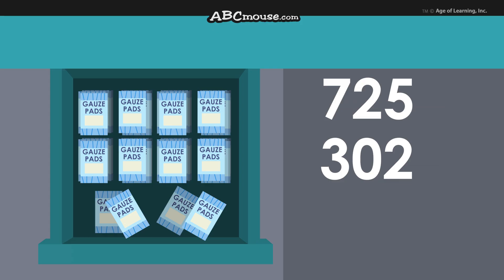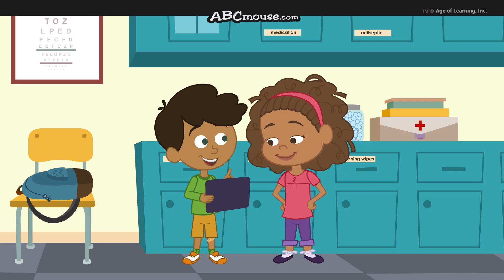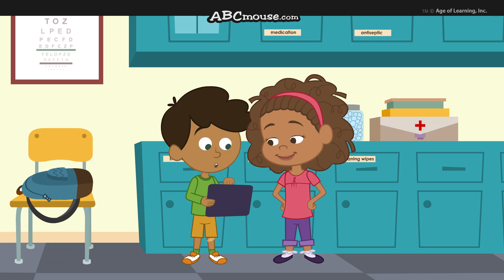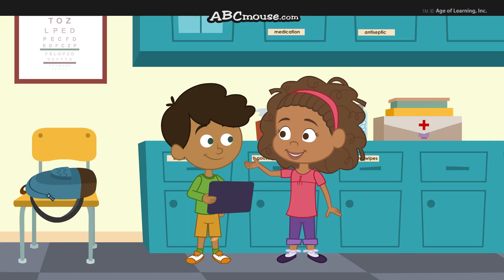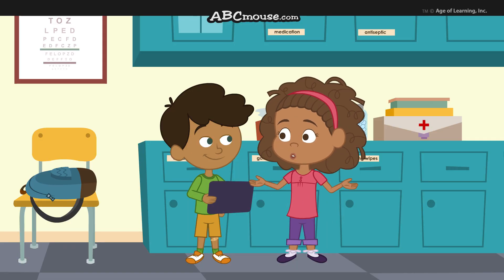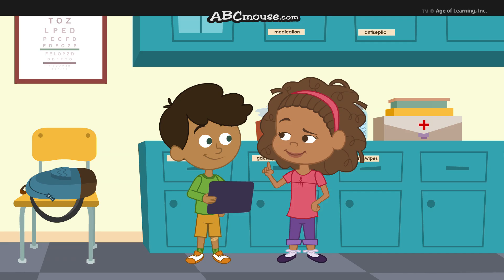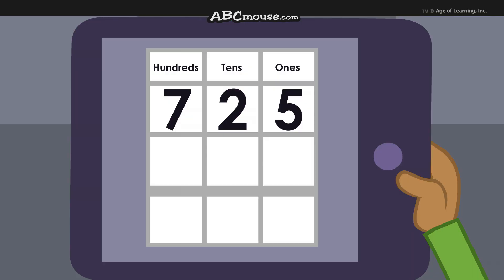So if we subtract 302 from 725, we'll know how many are in the drawer. In the top row we need a 7 in the hundreds place, a 2 in the tens place, and a 5 in the ones place. Now we need to subtract 302, so in the row below we need a 3 in the hundreds place, a 0 in the tens place, and a 2 in the ones place.